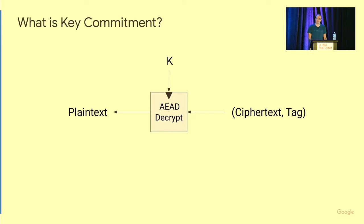The nice thing with authenticated encryption is that it not only provides confidentiality of the plaintext, but also authenticity. So whenever a bit flips in the ciphertext, this will be detected, and the algorithm will output that it's invalid and not leak any information about the plaintext.